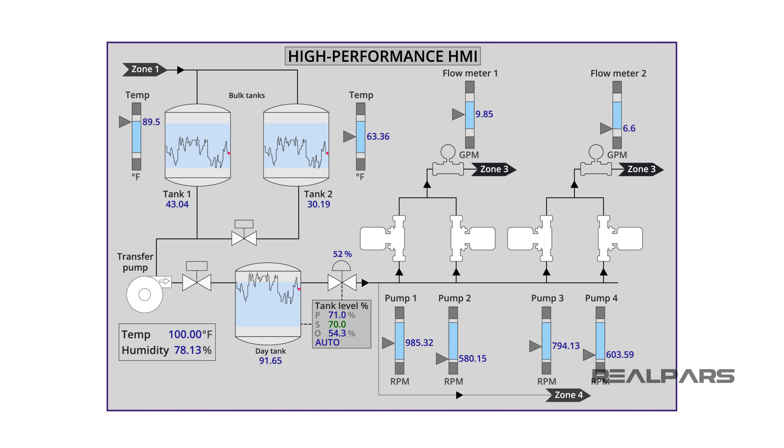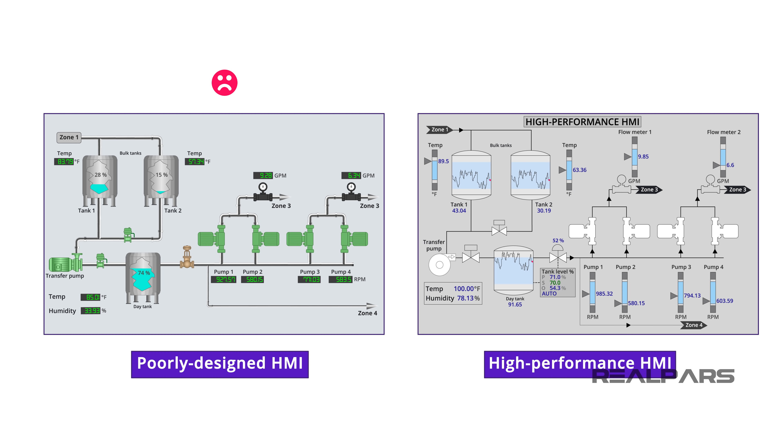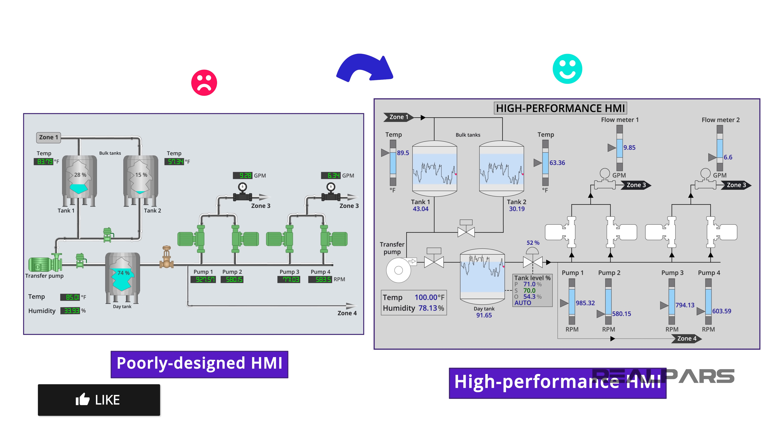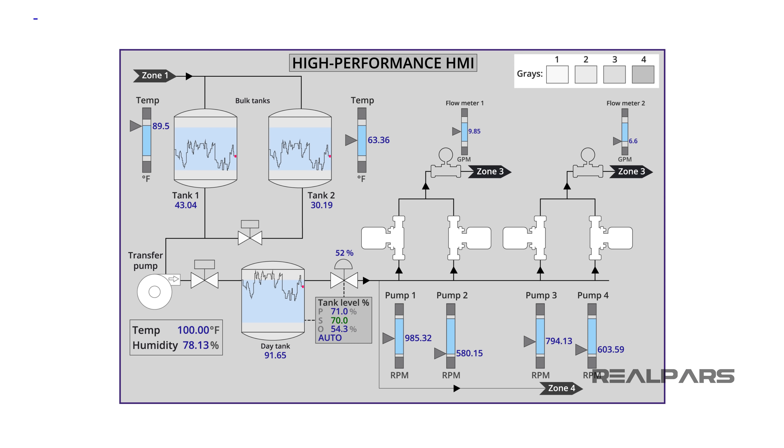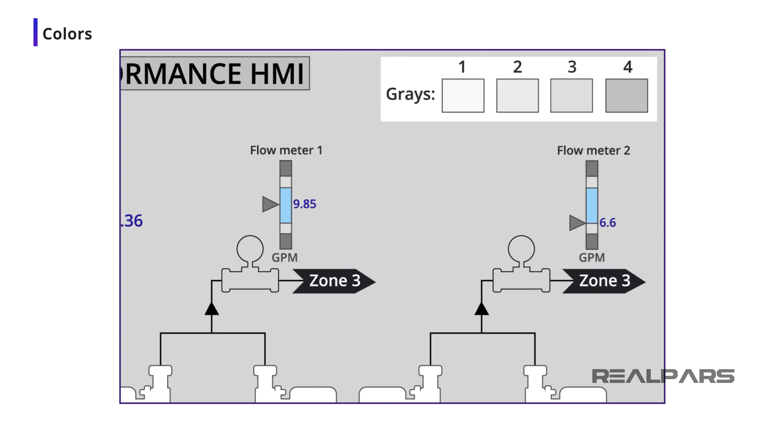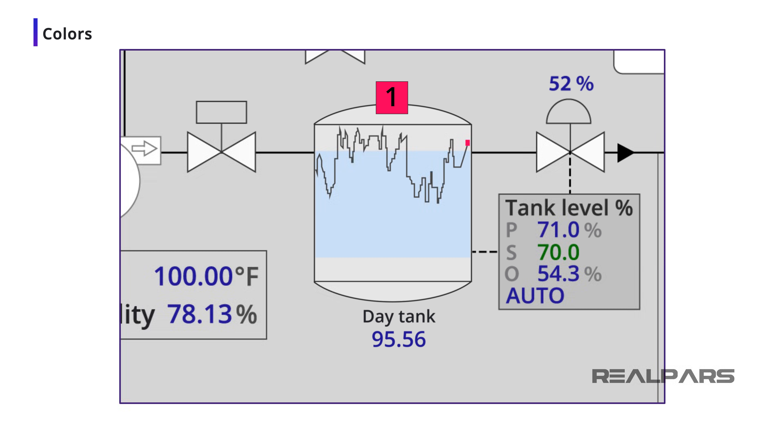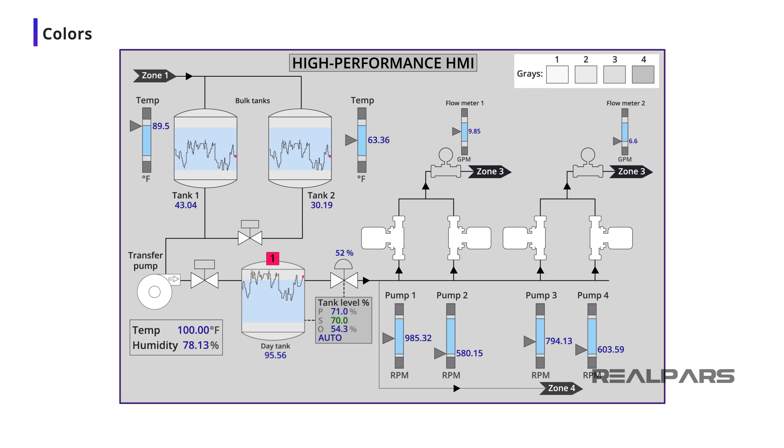The proper use of color in a High-Performance HMI is fundamental to its design. In many industrial HMIs, color was improperly used or overused. In a High-Performance HMI, color is strategically used and applied consistently across the entire project. Starting with the background color, a High-Performance HMI utilizes a light gray. The use of light gray will address the problems with glare, contrast, color interference, and operator fatigue. Generally speaking, the ideal background color is gray 3 or gray 4.